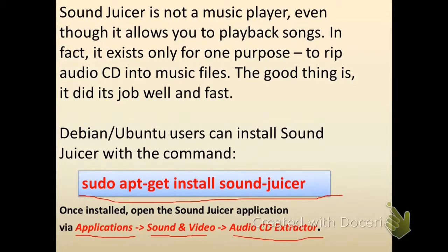Debian or Ubuntu users can easily install this program with the following command: sudo apt-get install soundjuicer. Make sure to write the command properly or you will get an error. Once the install is complete you will see the application installed.